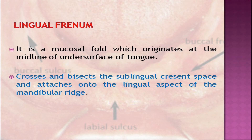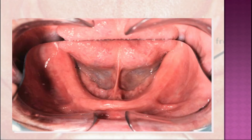The lingual frenum is a mucosal fold which originates at the midline of the undersurface of the tongue. It crosses and bisects the sublingual crescent space and attaches onto the lingual aspect of the mandibular ridge. In this picture you can see the frenal attachment.